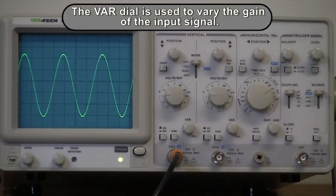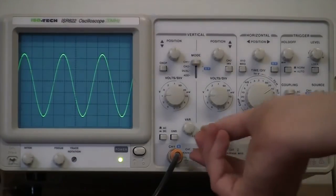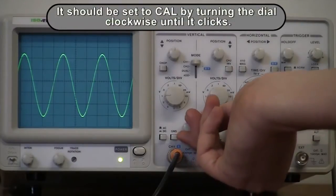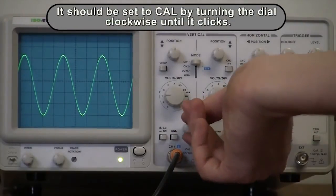The var dial is used to vary the gain of the input signal. It should be set to calibrated mode by turning the dial clockwise until the click is heard.